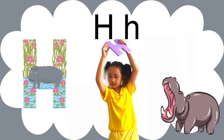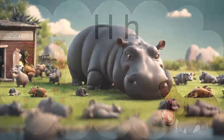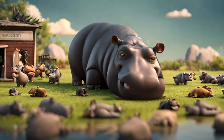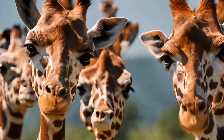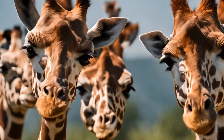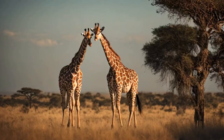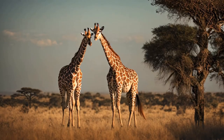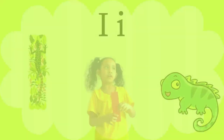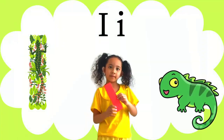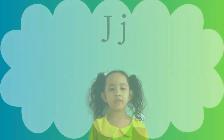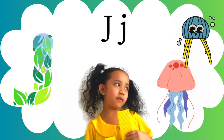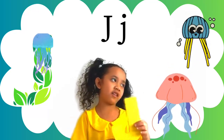So many creatures, wild and free, come join the jamboree. I is for iguana, with a spiky tail. J is for jellyfish, floating in the pail.